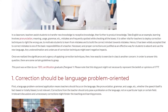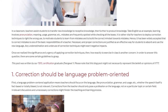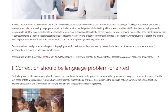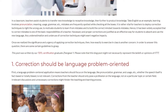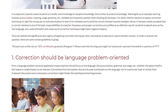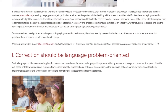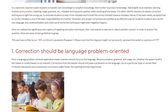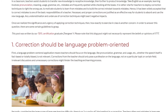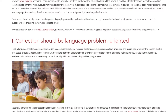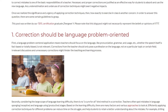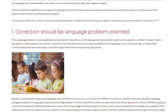Point 1: Correction should be language problem oriented. A language problem-centered application means teachers should focus on the language — like pronunciation, grammar, and usage — whether the speech itself is fact-based or totally biased is not relevant. Corrections from the teacher should only address the language, not a particular topic or certain field. Irrelevant discussions and unnecessary corrections might hinder the teaching and learning process.